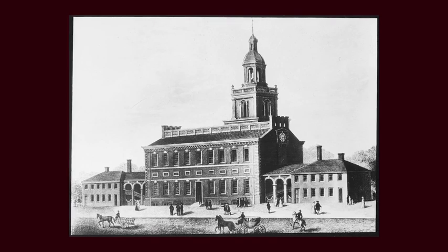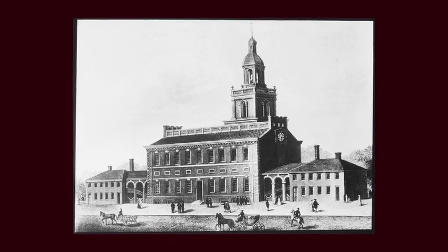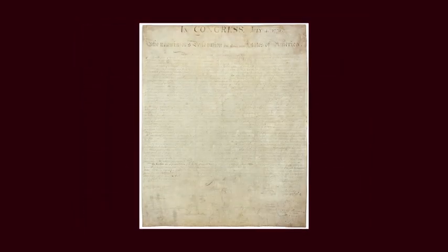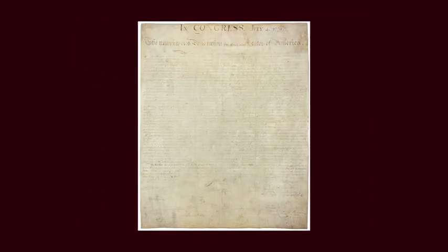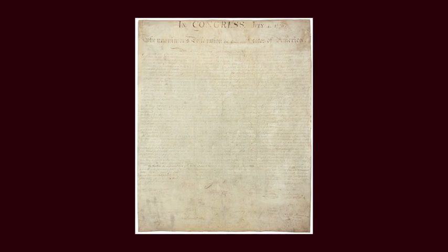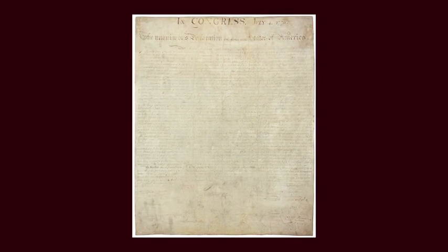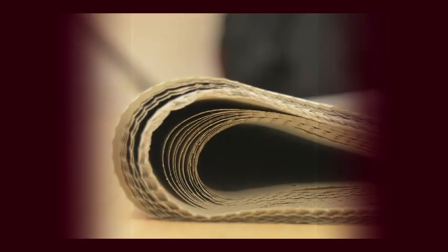Written as a joint effort by the convention, the entire U.S. Constitution was constructed within what is now known as Independence Hall. It was written and signed in the Assembly Room, which is the same room where the Declaration of Independence was also signed.